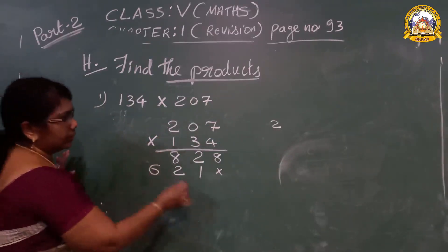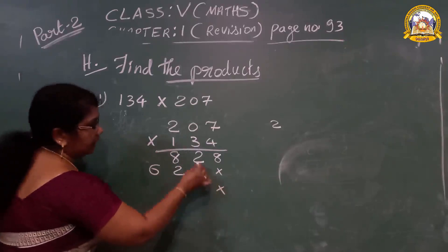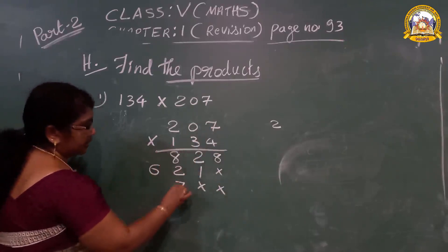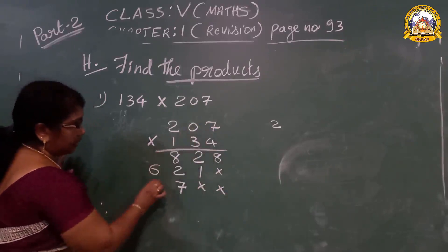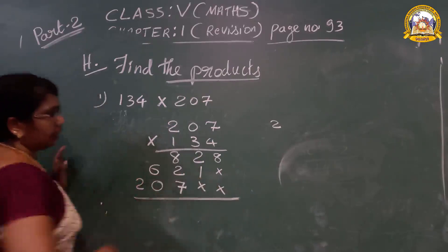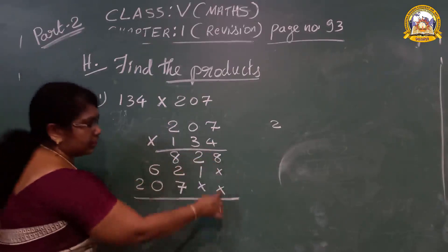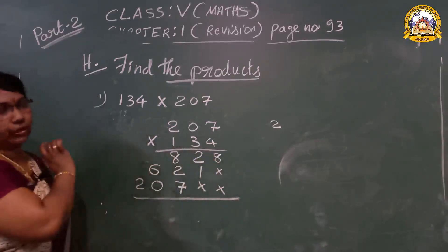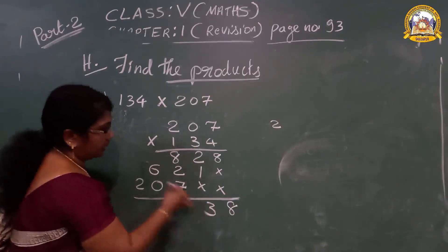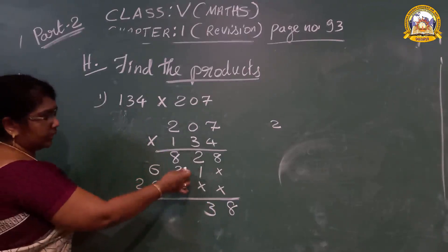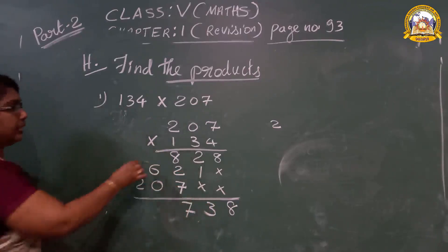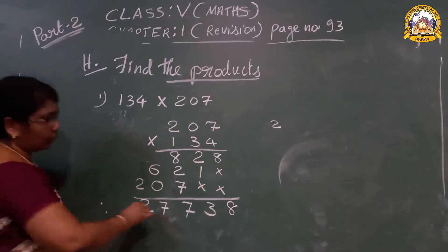Next, multiply with 1. Put the cross sign in 1s place and 10s place. 7 × 1 = 7. 1 × 0 = 0. 2 × 1 = 2. Now we have to add all rows. There is no number in that place, write 0. Here is 8. 2 plus 1 = 3. 8 plus 2 = 10. 10 plus 7 = 17, carry 1. 6 plus 1 = 7. Here is 2.